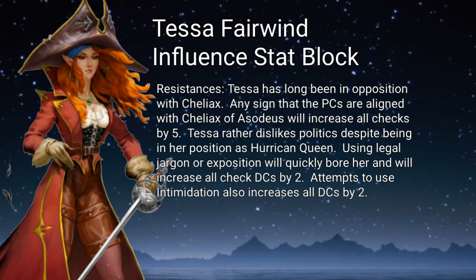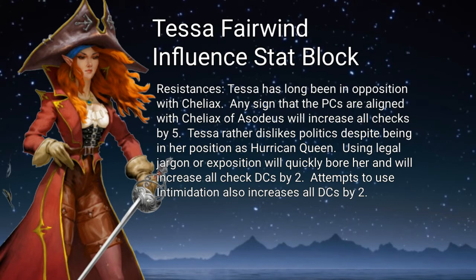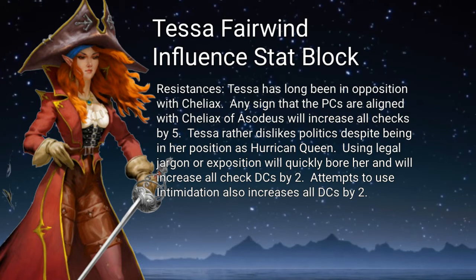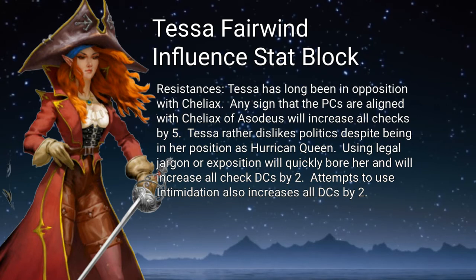For instance, Tessa Fairwind has long been in opposition to Chillax's, so any signs that a PC is aligned with Chillax's or Asmodeus will increase all influence checks by 5. She also dislikes politics despite being in her position as Hurricane Queen, so using legal jargon or exposition will quickly bore her and increase all checks by 2 as well. Attempts to use intimidation will also increase all the DC checks by 2.